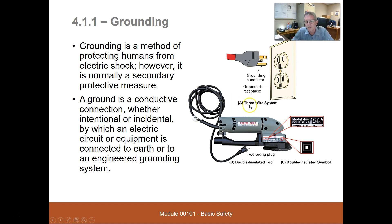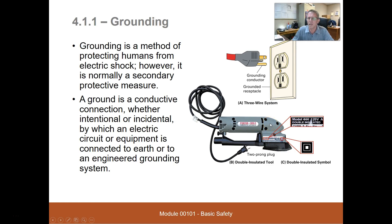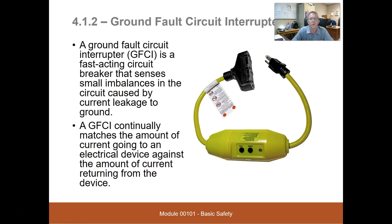Another option to eliminate the need for that third prong is to buy double-insulated tools. The symbol is a square inside a square, or it will say 'double insulated.' That means all the electrical parts inside have been insulated once, and then on the outside all the parts you touch have a second layer of outer insulation. Double-insulated tools do not require a grounding prong.